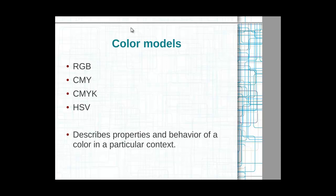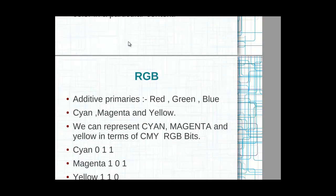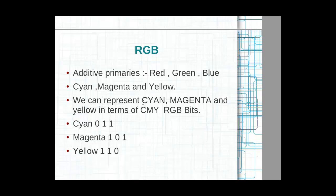Coming to RGB colors, we have two types. The first is additive primaries — these colors come directly from light energy: red, green, and blue. We can produce cyan, magenta, and yellow from these. The basic term is that cyan, magenta, and yellow can be classified as CMY in the RGB bit system. So how do we classify them in the RGB bit system?